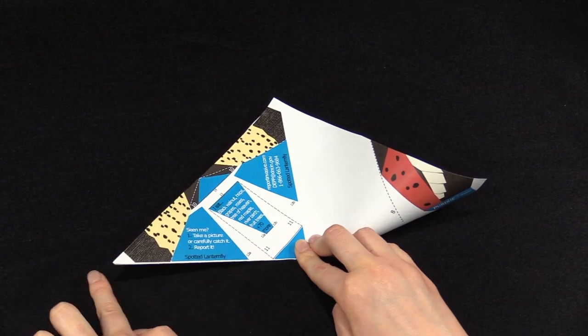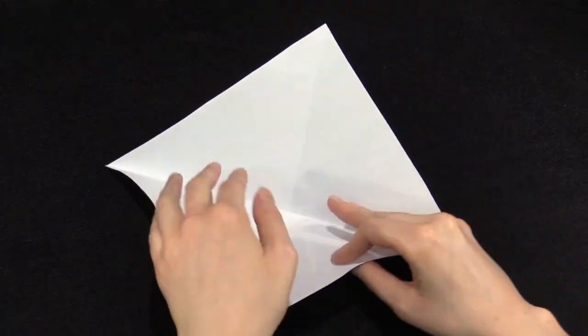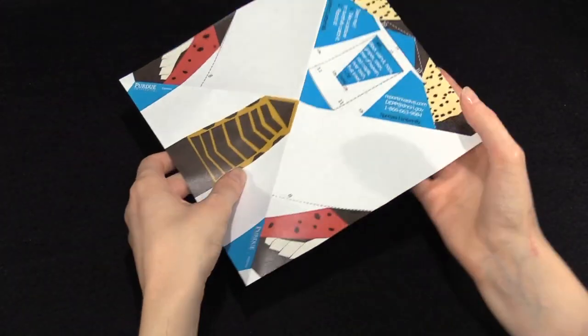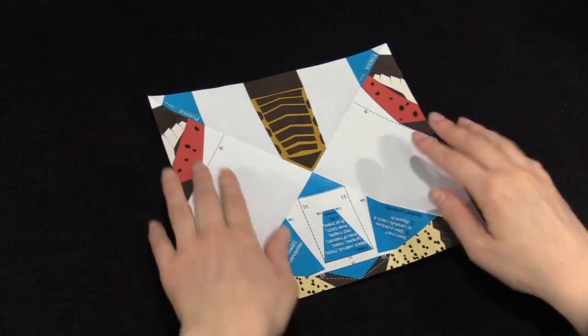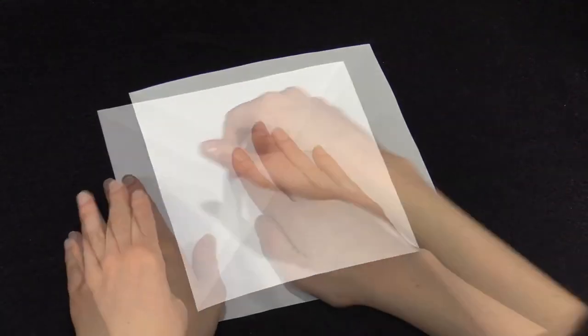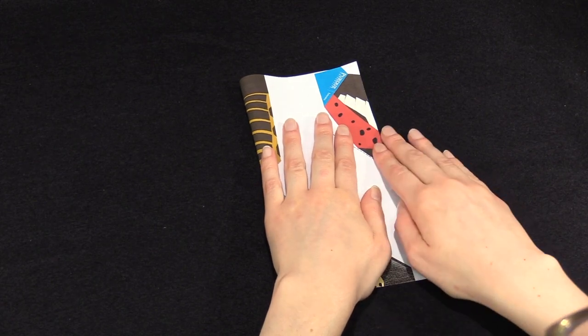Flip the pattern over so that you can check the orientation. Line it up so that the pale yellow wings are at the bottom and the bright yellow abdomen is at the top. Flip the paper back to white side up and fold in half.